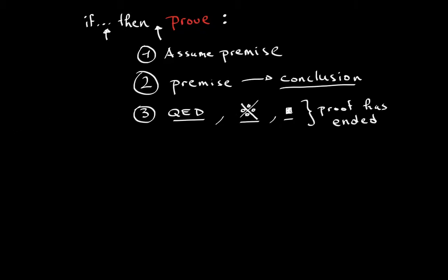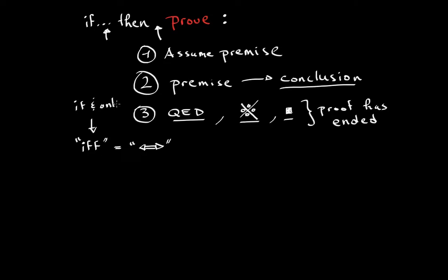Now let's talk about if-and-only-if proofs. If-and-only-if can be written as 'iff', and this is the same as using the double-sided arrow symbol. That's what 'iff' stands for — if and only if.